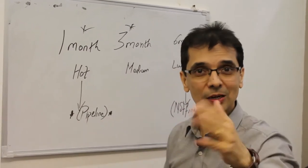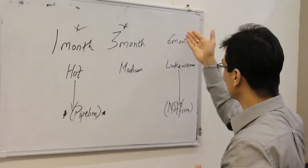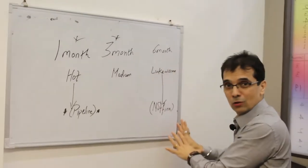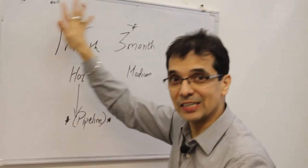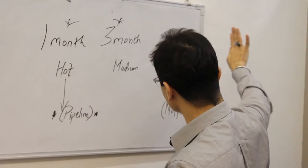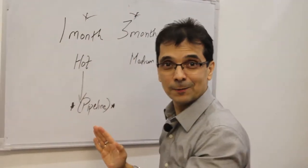If it's a one-month deal for us, it's a hot deal. If it's under three months, it's a medium deal. And if it's over six months, it's a lukewarm deal. Lukewarm deals are fine. Hot pipeline is the one-month deal. You nurture them, spend some time here, but most of your time is spent right here.